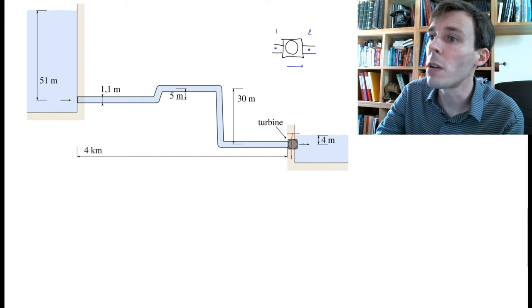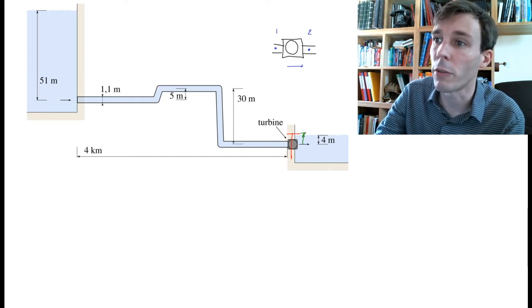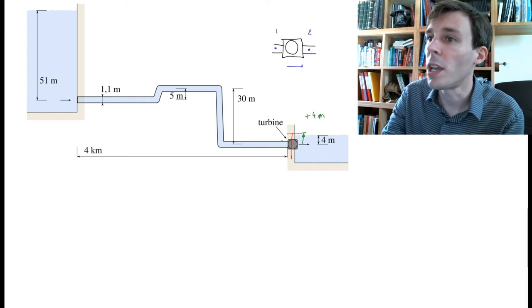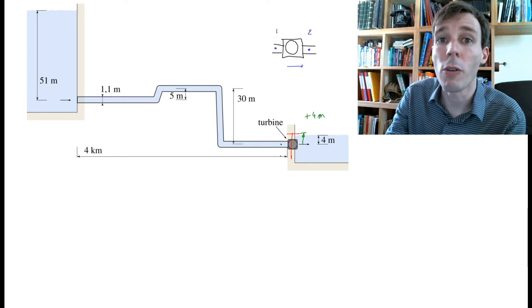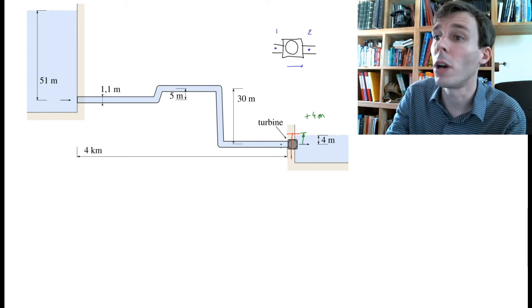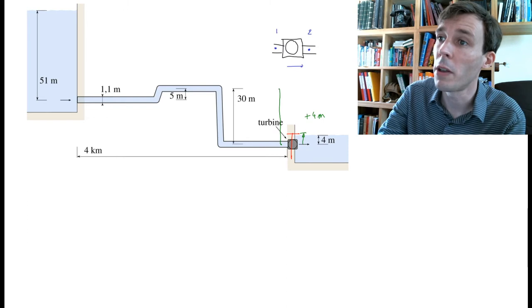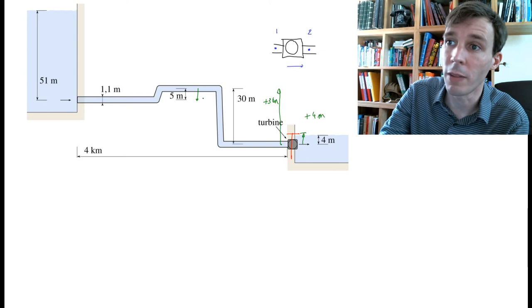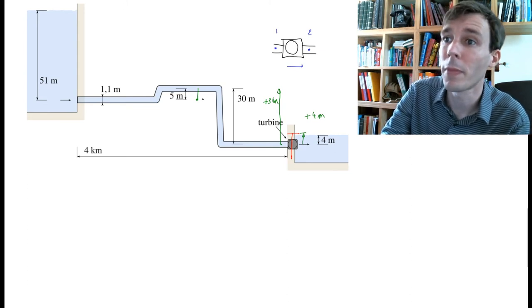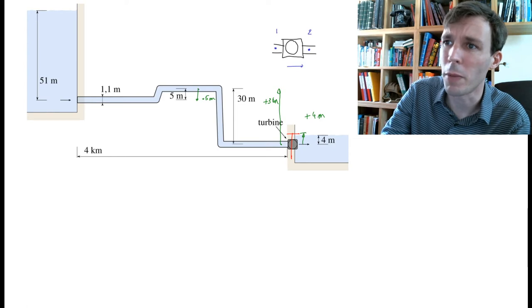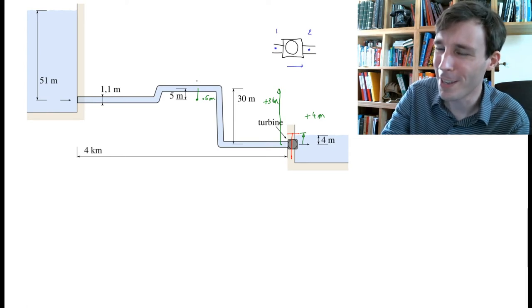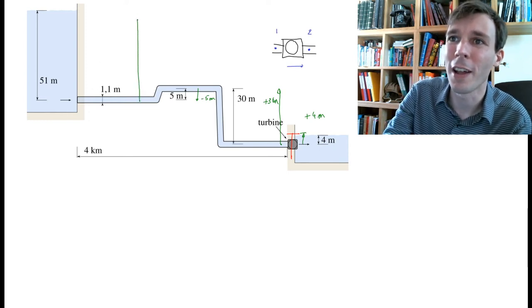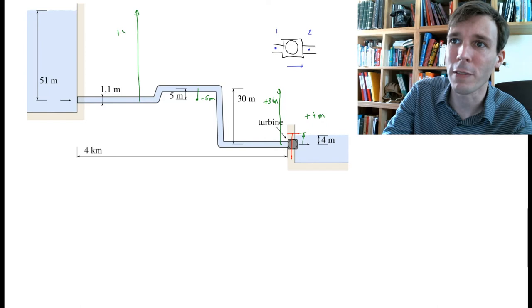If you look at point 2, the distance to the free surface is 4 meters. If you look at point 1, how high up do you have to go to get to the free surface? Well you have to move up by 30 meters, then down by minus 5 meters, and then up again by plus 51 meters.